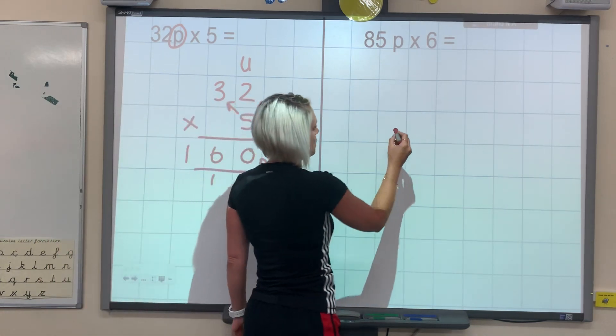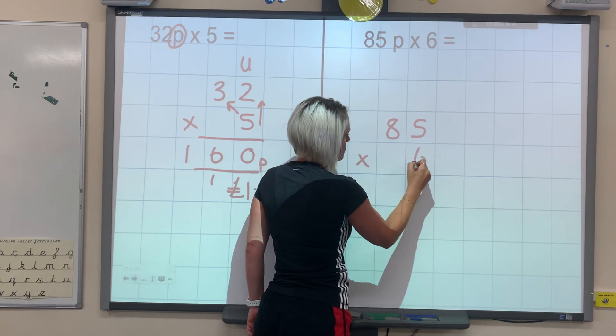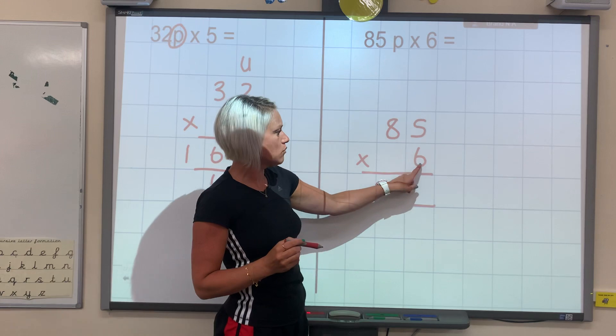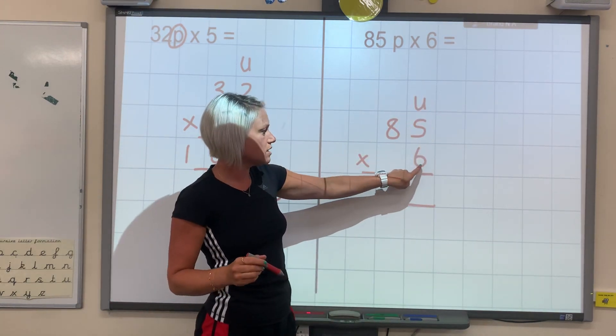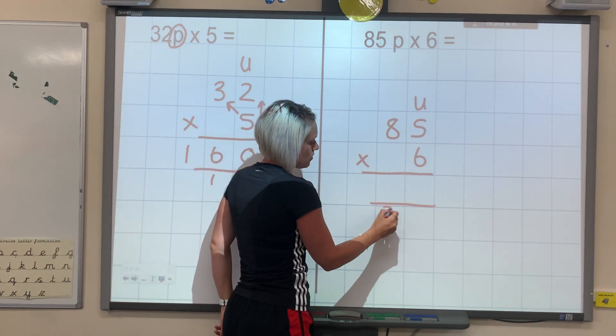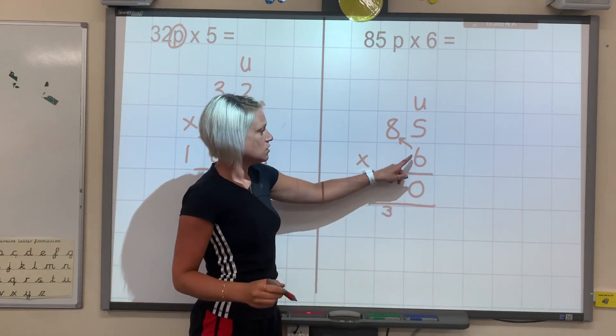Let's have a look at the next one. So 85 pence times 6. So my 6 goes in my units. And the first thing that I do is I multiply these two in my units column together. So 6 times 5 is 30. Then I go this way across. So 6 times 8.